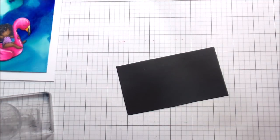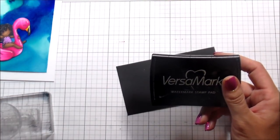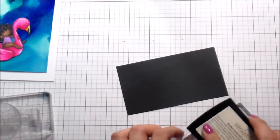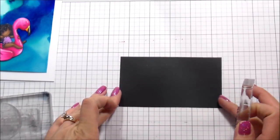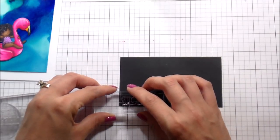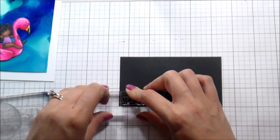I'm going to heat emboss my sentiment. This is actually from the Beach Day set. The two different sentiments I'm using. And I'm treating that with an anti-static tool, stamping it in Versamark, and using my heat gun to heat it up until it's nice and smooth.